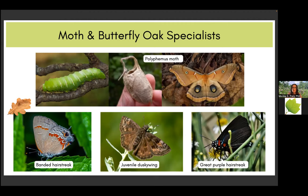I'd also like to mention three beautiful pollinator butterflies. The banded hairstreak butterfly lays its eggs on dead oak leaves that fall to the ground. The eggs overwinter on the leaves, hatch in spring, and the first food will be the dead leaves — so whenever you keep your leaves, you support this butterfly. The juvenal's duskywing has amazing camouflage to tree bark. And the great purple hairstreak doesn't feed on the oak tree itself, but its caterpillar feeds on oak mistletoe, a hemiparasite of oak trees.